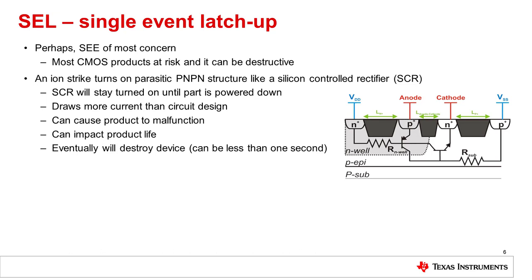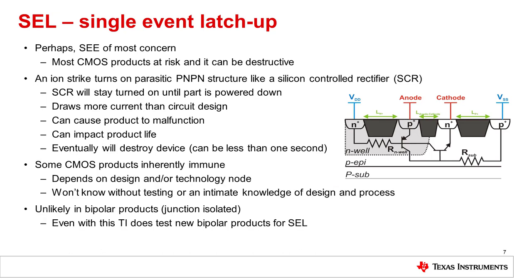An ion strike at the middle of the part turns on this SCR, which won't turn off until the whole part is powered down. This SCR-like structure can draw more current than the circuit is designed to carry. This can cause the product to malfunction, impact the life of the product, and eventually destroy the device — in some cases in less than one second.